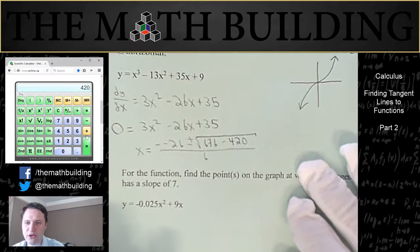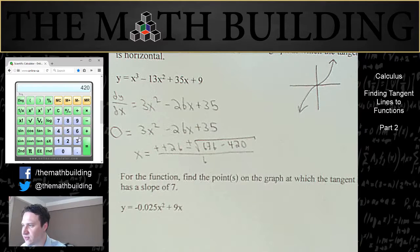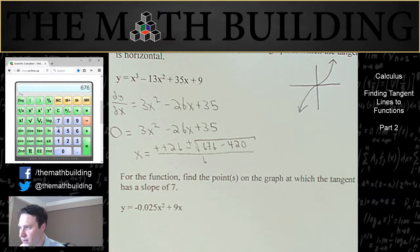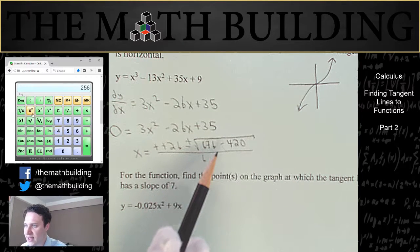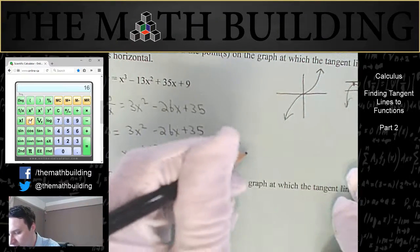So there you go. There's our quadratic formula. Let's turn these two negatives to pluses, and let's do 676 minus 420, which equals 256, and that actually will have a square root. So we could have factored that.